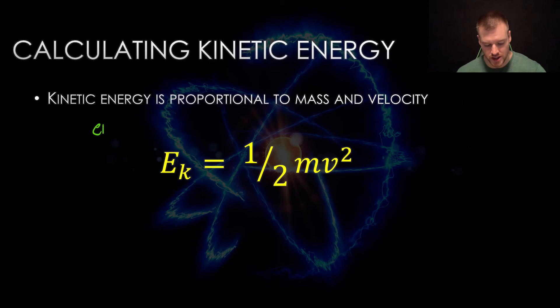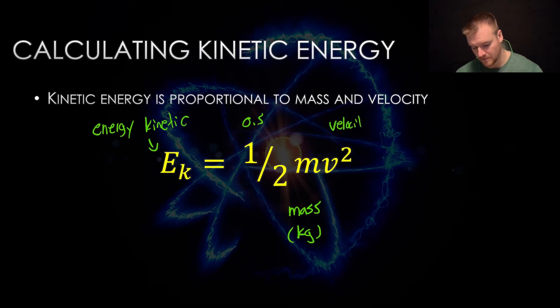So this is the formula. EK, which means energy kinetic, is equal to half, so 0.5 in your calculator, MV squared. The M stands for mass and has to be measured in kilograms. Velocity, V, has to be measured in meters per second. The unit for energy, which we talked about before in work, is joules.